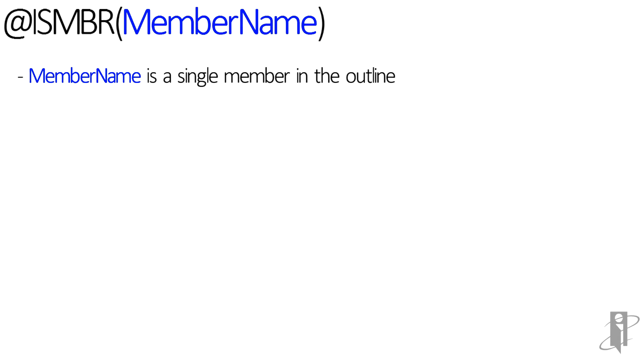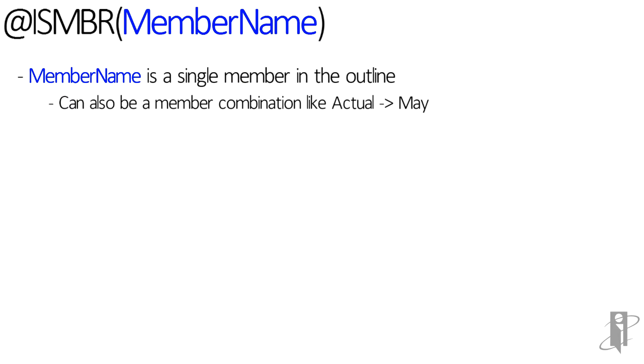What people don't realize, though, is that you can also use a member combination. So you can say isMember Actual crossed in May, and only if you're calculating those two members at the same time will it return true.